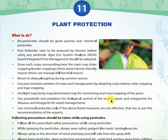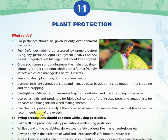Manage pests by adopting crop rotation, intercropping, and trap cropping. Use light traps, sticky traps, and pheromone traps for monitoring and mass trapping of pests. Use parasitoids and predators for biological control of insect pests, and antagonistic species for diseases and bio-agents for weed management.